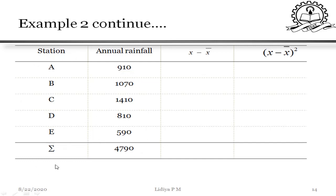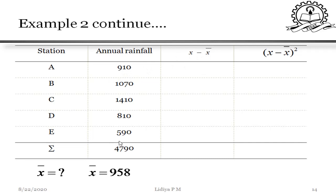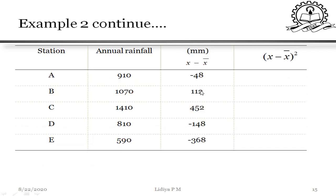First step: calculate X-bar, the average rainfall. X-bar = 4790 divided by 5 stations = 958 mm. Then take the difference between each value and the average — for example, 910 minus 958 gives minus 48 — and record these differences. Then square each difference.